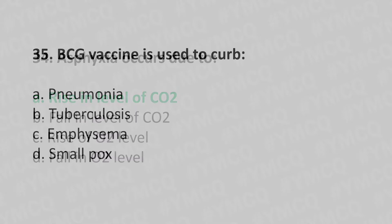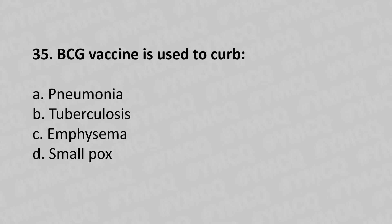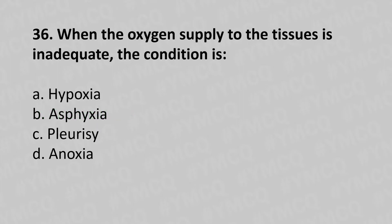Now move to our 35th question. When the oxygen supply to the tissue is inadequate, the condition is. Option A: Hypoxia. Option B: Apnea. Option C: Pleurisy. Option D: Anoxia. And the answer is Option A, Hypoxia.